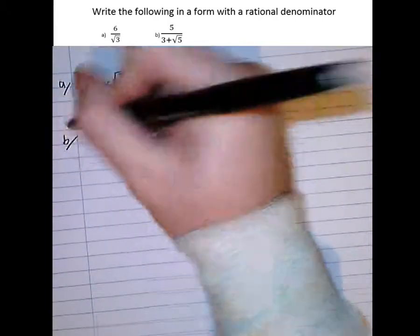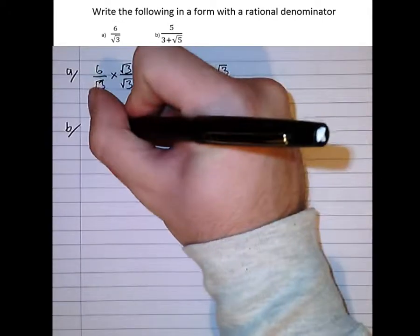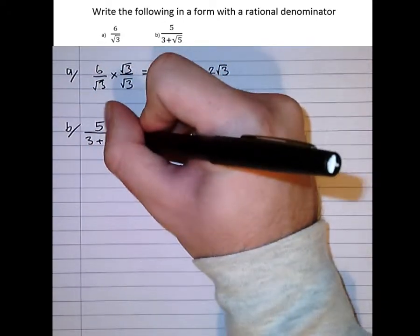Okay, part B. So, look at part B. It's asking us to rationalise the denominator for 3 plus root 5 on the bottom.